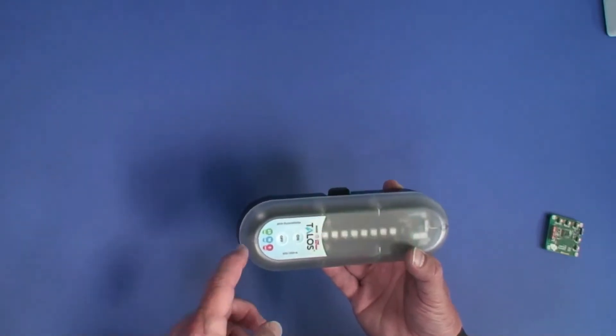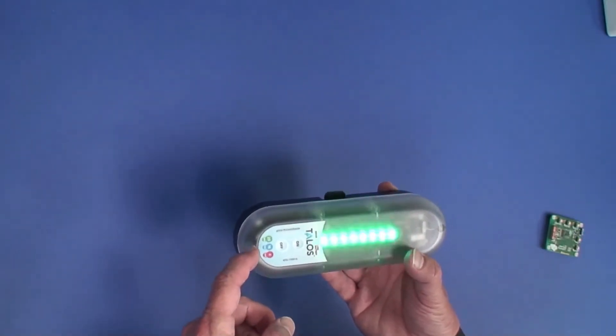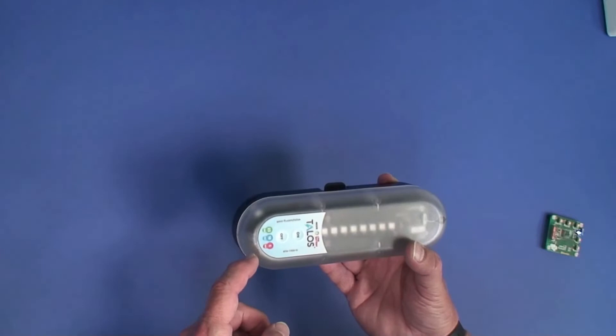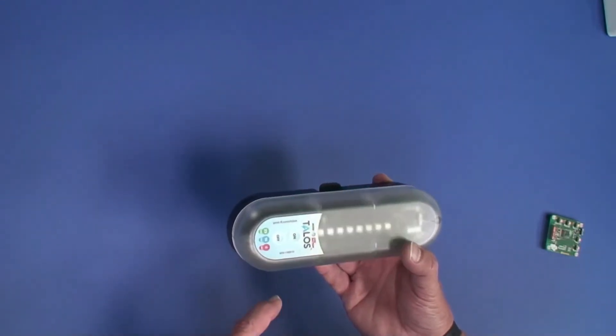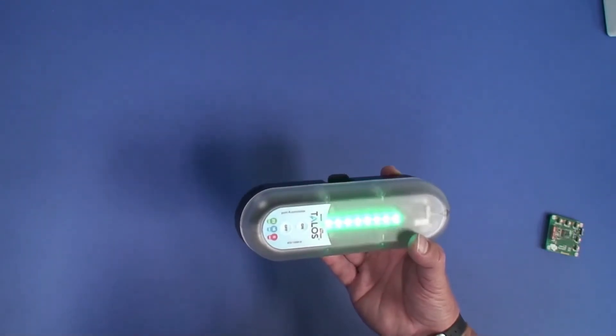As we go in closer, it will turn blue, which is 16 miles down to 7 miles, and then it will turn red when it's less than 7 miles.